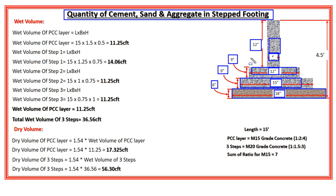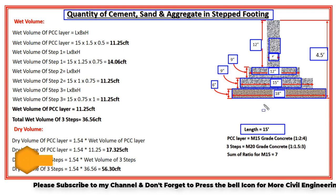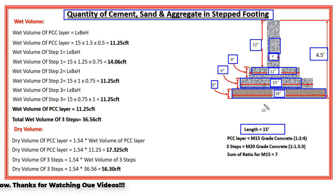Now I have the height of each step, but I don't have the total height of this stepped footing. In order to find the total height, I will add the height of each step. After adding these heights, the total height of this particular stepped footing will become 4.5 feet. The length of this stepped footing is 15 feet. If this stepped footing is used for a wall, the length of that wall would be 15 feet — it can also be used in construction of a building or house.